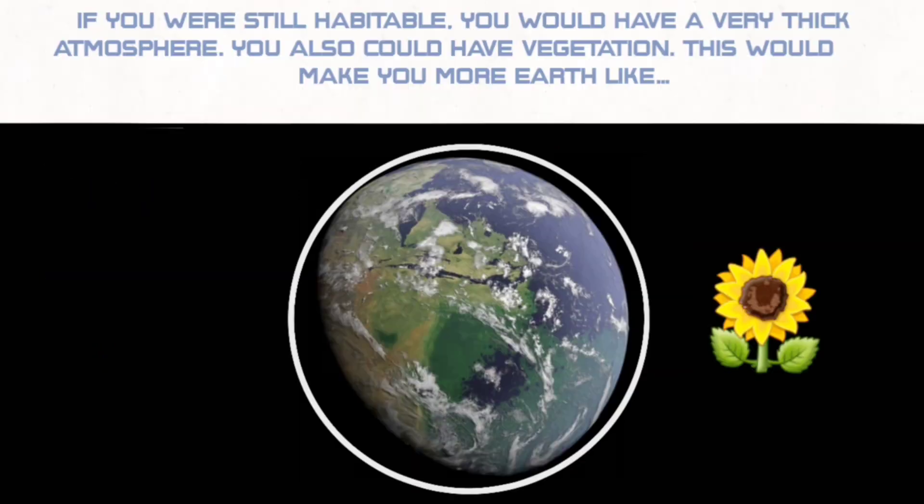Now, Mars. If you were still habitable, you would have a very thick atmosphere. You could also have vegetation. This would make you more Earth-like.